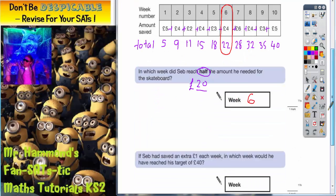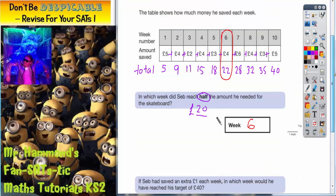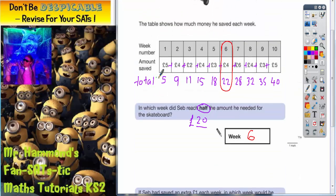Scroll down and see the next part of the question. If Seb had saved an extra £1 each week, in which week would he have reached his target of £40? Well what we can do is rewrite the amount saved so that they are £1 extra each week. So £1 more than £5 would have been £6. 1 more than £4 is £5. 1 more than £2 is £3. 1 more than £4 is £5. 1 more than £3 is £4. 1 more than £4 is £6.